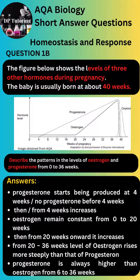Six: progesterone is always higher than estrogen from 6 to 36 weeks. If you did not manage to score all three marks, pause the video and review the graph and answers before you continue.